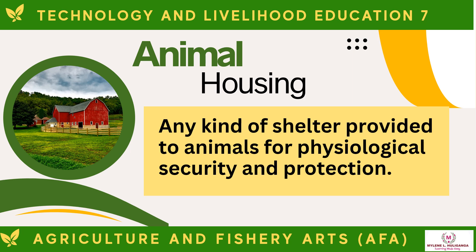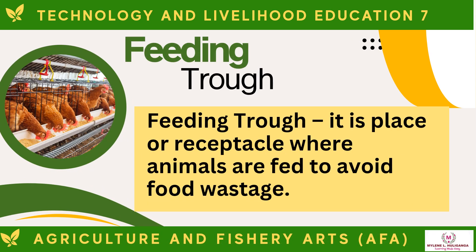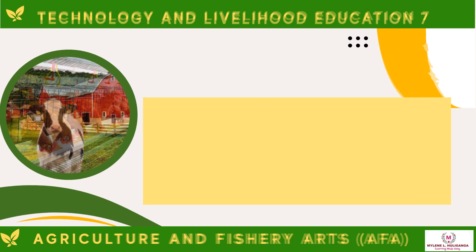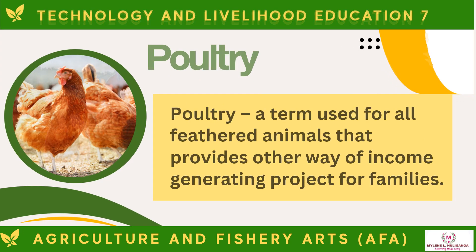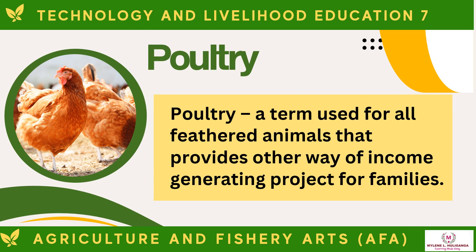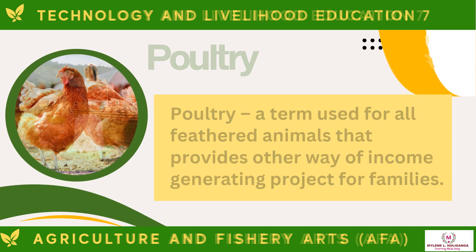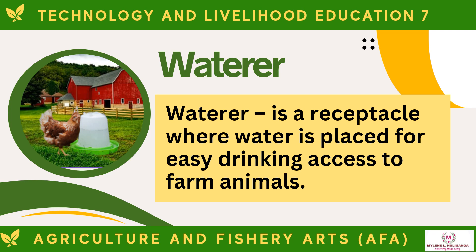Animal housing is any kind of shelter provided to animals for physiological security and protection. Feeding trough is a place or receptacle where animals are fed to avoid food wastage. Livestock are farm animals like hogs, cattle, goats, and rabbits that are reproduced under man's care. Poultry is a term used for all feathered animals that provide another way of income-generating projects for families. A waterer is a receptacle where water is placed for easy drinking access to farm animals.